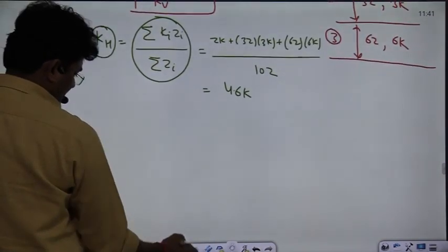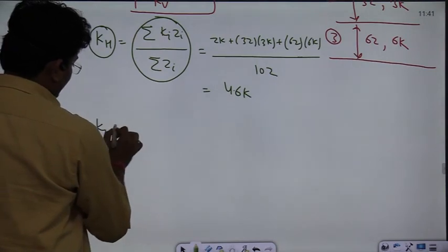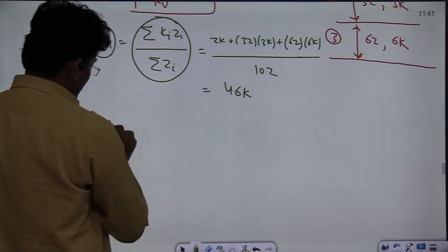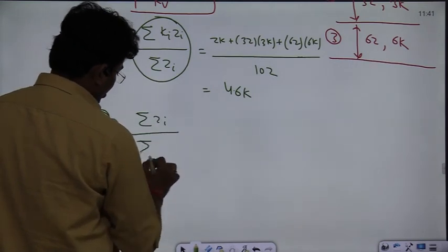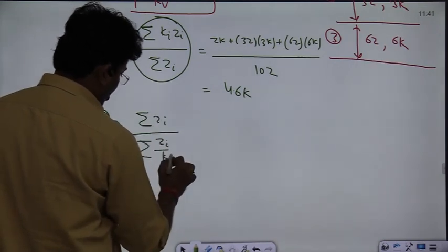Now see the vertical permeability formula. How does it come out? Kv is given by summation of zi divided by summation of zi by ki.